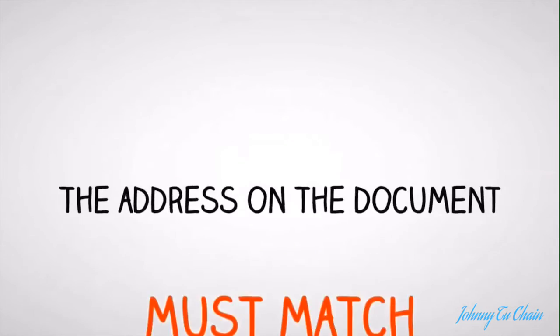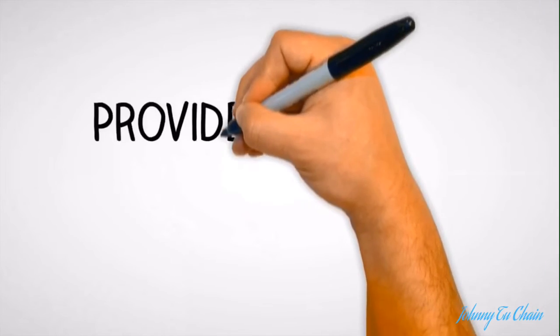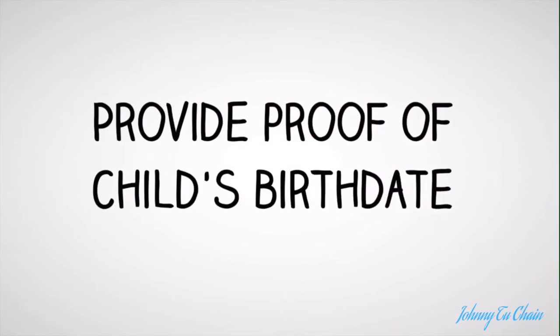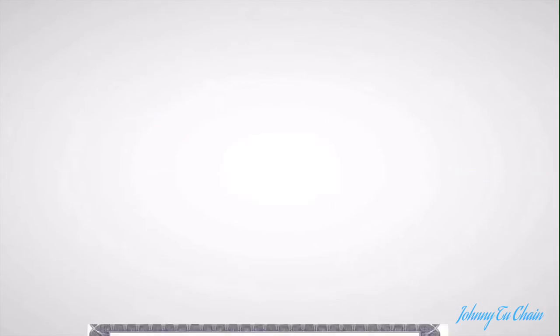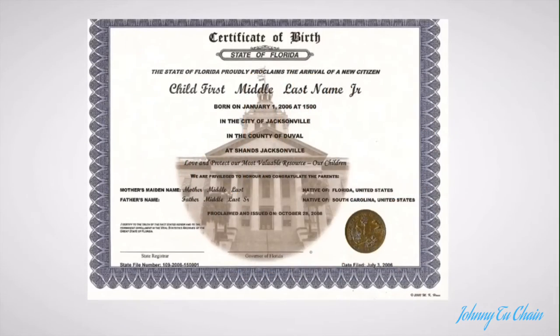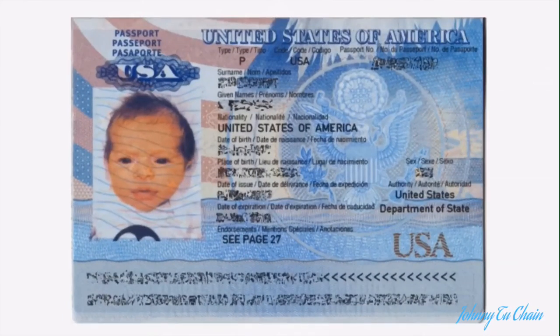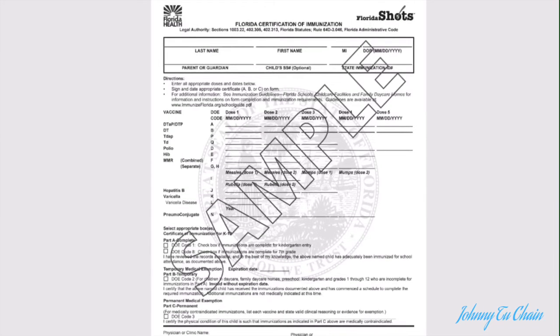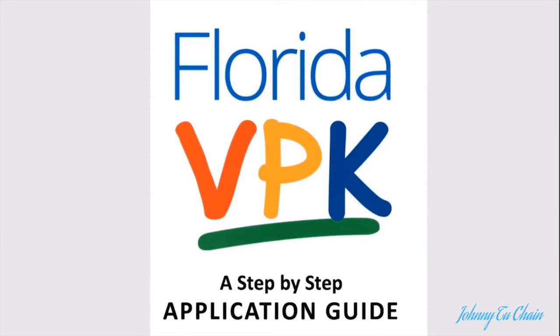Step 3: Provide proof of your child's birth date. This can be a birth certificate, your child's passport, or your child's shot record. For additional document examples, please refer to our VPK application guide.